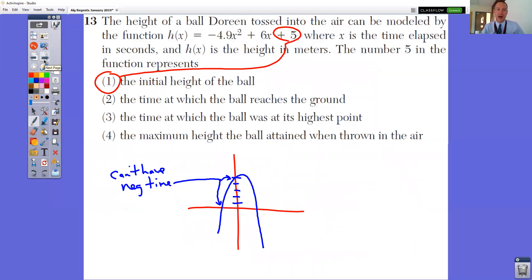In question number 13, the height of the ball Dorian tossed is given by this equation. The number five in the function represents what? Well, when you go and graph it, that plus five, you notice that the y-intercept is five. That y-intercept is where the graph is starting. This part of the graph in the negative region doesn't really exist, because you can't have negative time. So this doesn't really exist at all. Where it's starting off at is five. That five is the initial height of the ball. That's where it's starting off at.